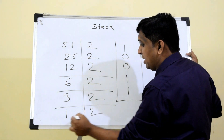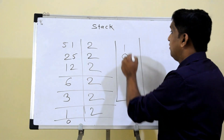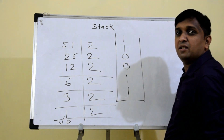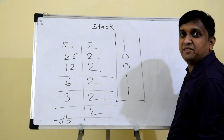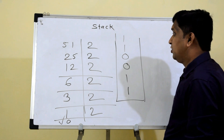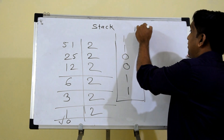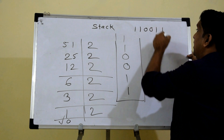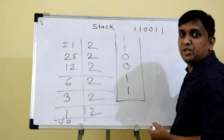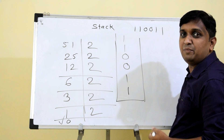Divide 1 by 2: quotient 0, remainder 1 — push onto the stack. I stop here since the number has reduced to 0. Popping all elements of the stack gives the output 1 1 0 0 1 1, which is the binary equivalent of 51. Now let's implement the program.